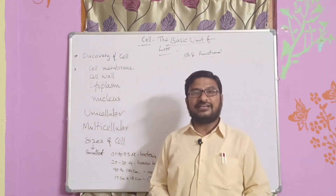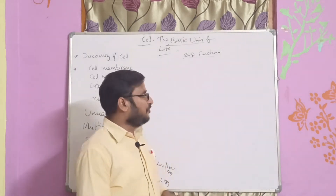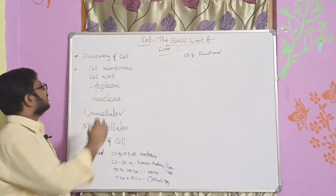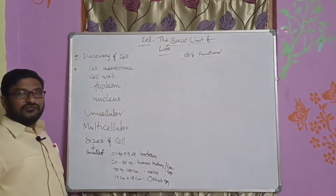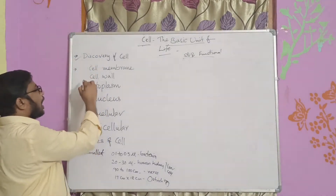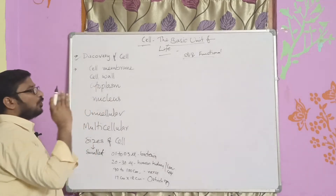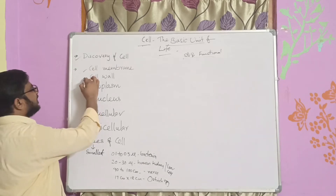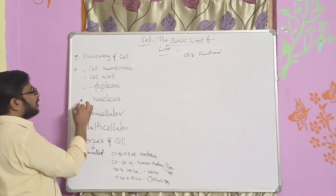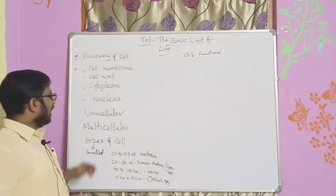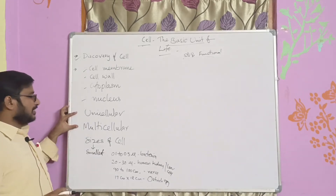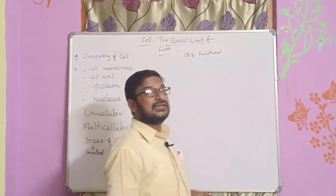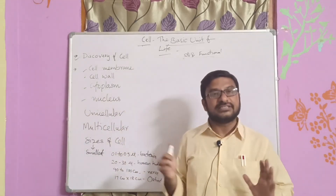In the 8th class standard, we can see different components. It discusses the discovery of cell, and only three parts are covered: cell membrane, cell wall, cytoplasm, nucleus, and the types of cells — unicellular and multicellular — along with different sizes of cells. These are the parts discussed in this syllabus.